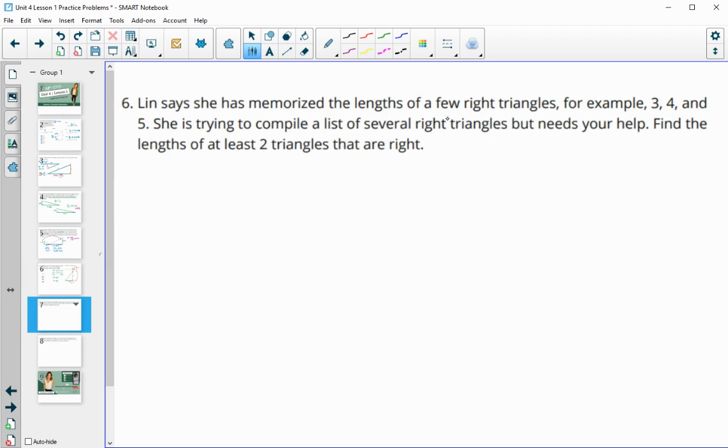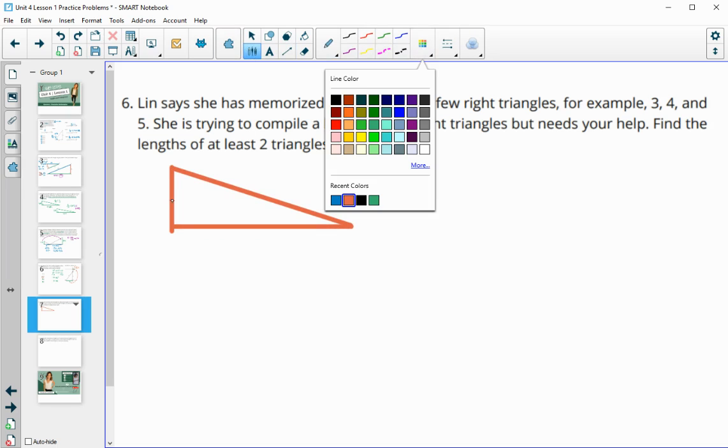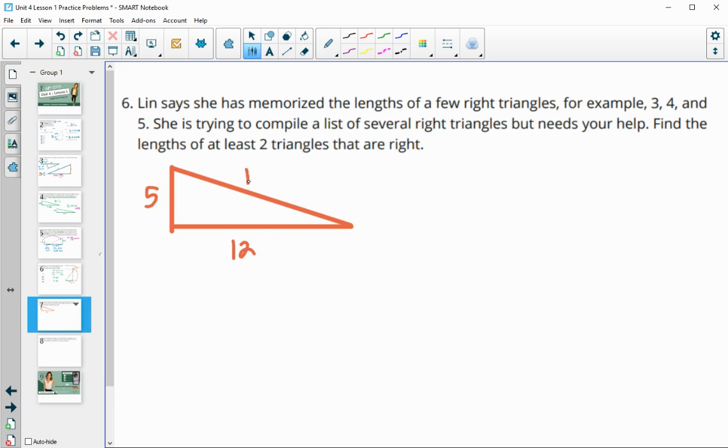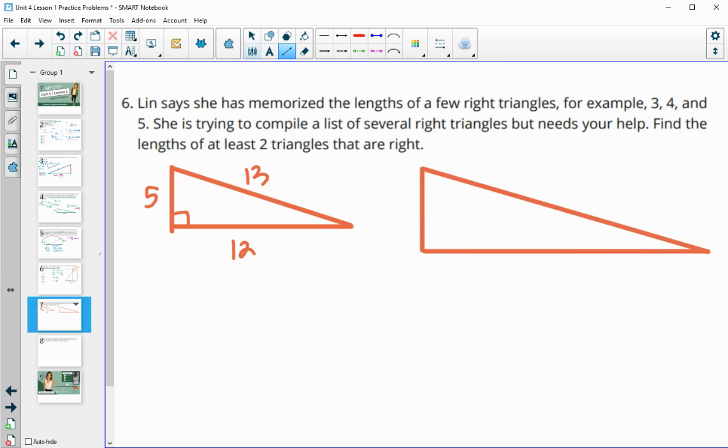Lynn says she's memorized the lengths of a few right triangles. So the one that I just talked about, a 3-4-5 right triangle. She's trying to compile a list of several right triangles, but she needs your help. So give her a couple more. So she has 3-4-5. Another fairly common right triangle, Pythagorean triple, where all of the sides are whole numbers, is a 5-12-13. So this is 25 plus 144 is 169. So that one works. Another one is a 7-24-25.